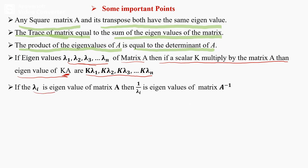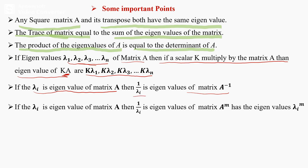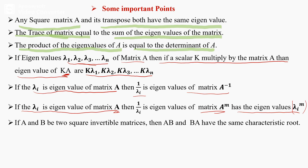If λᵢ is an eigenvalue of matrix A, then the eigenvalue of matrix A inverse is 1/λᵢ. And if λᵢ is an eigenvalue of matrix A, then the eigenvalue of matrix Aᵐ is λᵢᵐ. For example, if matrix A has eigenvalue λ₁ = 2, then the eigenvalue of A² is 2². If A and B are two square invertible matrices, then AB and BA have the same eigenvalues.